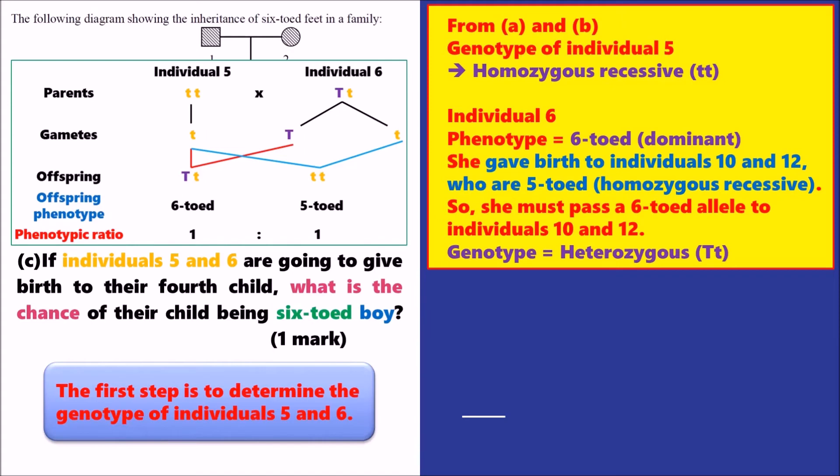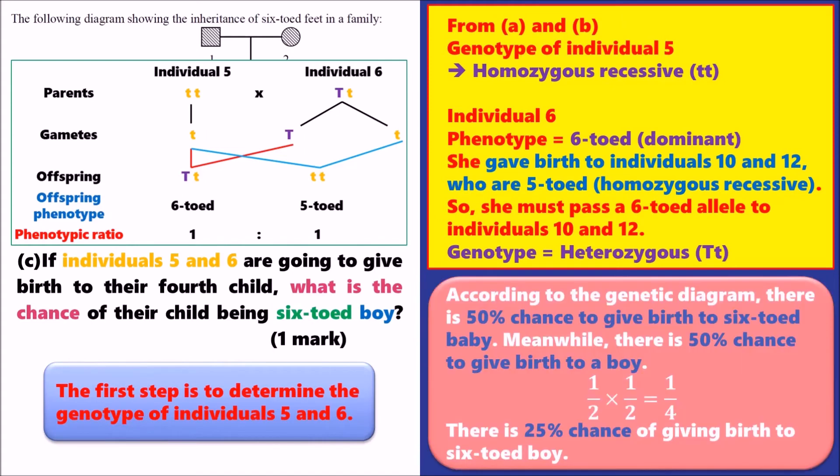However, that is not yet the final answer, because there is a second criterion — we need a 6-toed boy, not just a 6-toed baby. The chance of giving birth to a boy is also 50%. Therefore, the equation is one-half times one-half, giving an answer of one-quarter, which means a 25% chance.